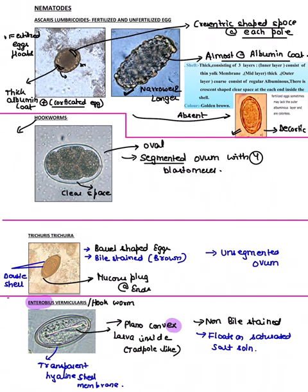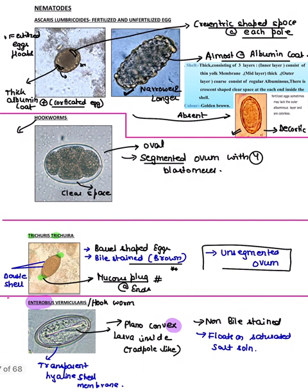For Trichuris trichiura — the name is repeated twice, so like H. nana, there is polar thickening at both ends, but here instead of polar thickening you have mucus plugs. It is a bile-stained egg hence brown in color, so it does not come in the NEHA mnemonic. It is also unsegmented, unlike hookworm.